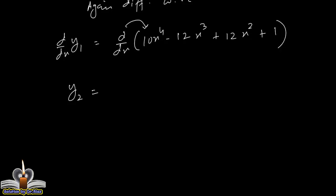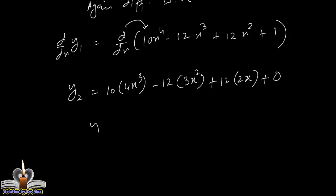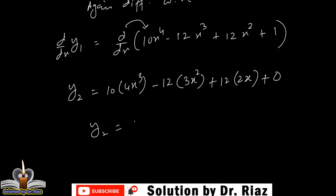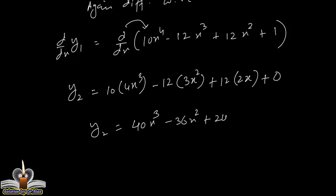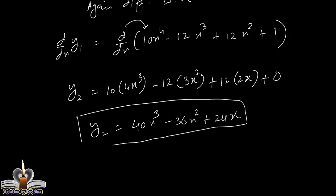اب اس کو الگ سے differentiate کریں گے۔ 10 into 4x³ = 40x³؛ minus 12 into 3x² = 36x²؛ plus 12 into 2x = 24x؛ اور 1 کا derivative 0۔ So y2 is equal to 40x³ - 36x² + 24x. تو یہ ہے ہمارا final answer question number 1 کے first part کا۔